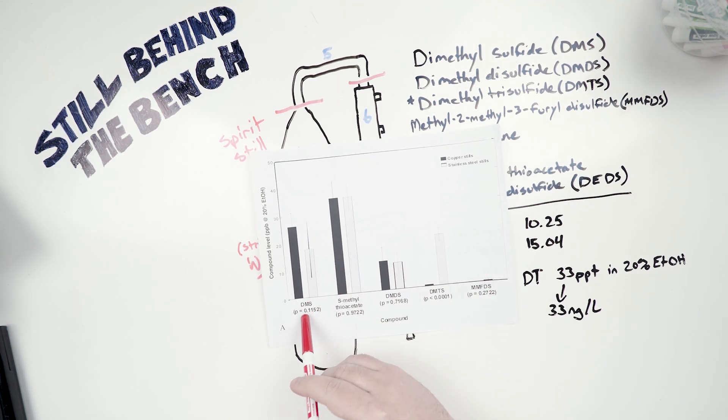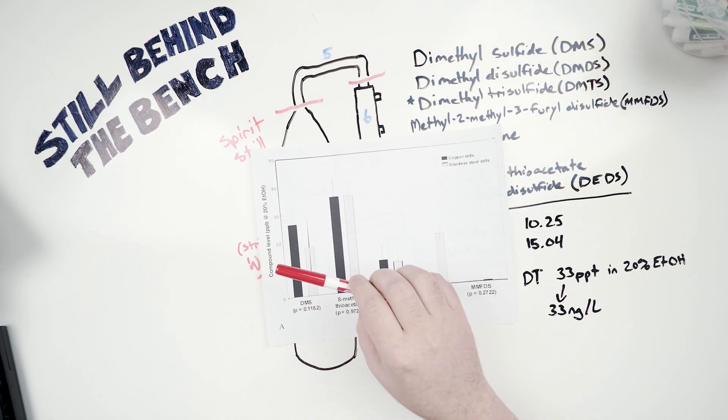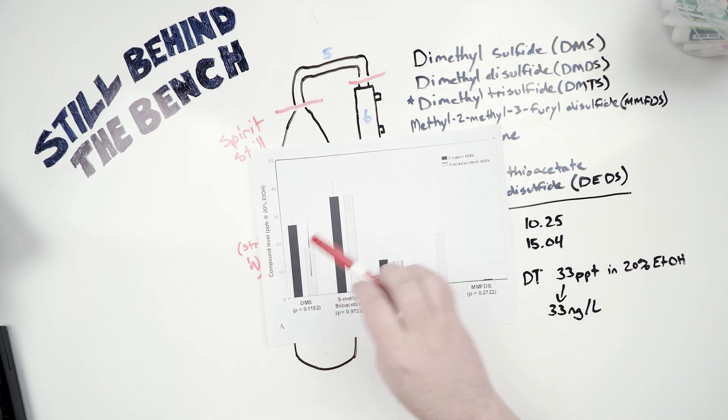The difference comes with the dimethyl sulfide, which you can see that the copper actually makes more of, and at the beginning of the study they show that, or they refer to other experiments that have been done that show that copper salts can increase the concentration of DMTS, and I imagine it also increases the concentration of DMS, which is why in a copper still there is more DMS than there would be in a stainless steel still, because there'll be copper salts being formed in the kettle, which will react to create more DMS.